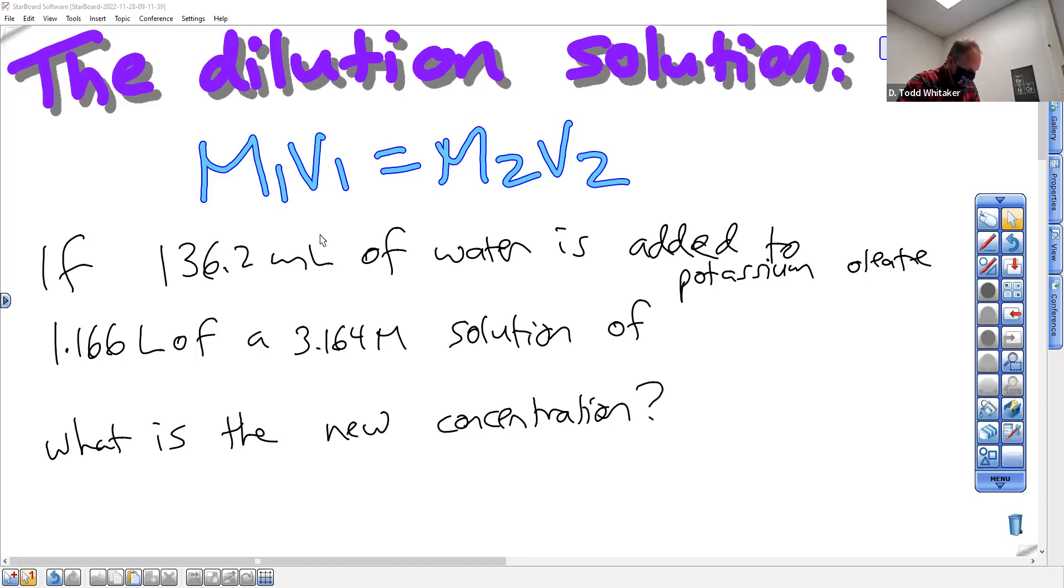One final dilution problem for today. We've got an amount of water we're adding to a solution of potassium oleate that has this concentration, 3.164 big M.